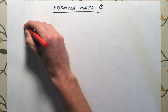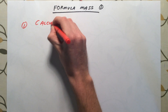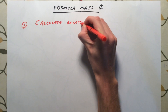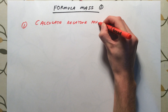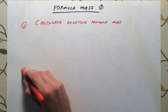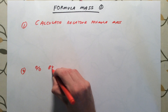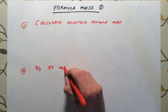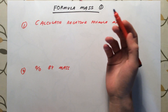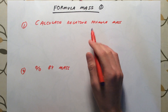There are two things we need to be able to do with formula mass. The first is to calculate the relative formula mass. The second is to calculate percentage by mass for an element in a compound. We're going to look at a couple of examples of each. Calculating the relative formula mass is relatively straightforward — all we need to do is work out the total mass of the atoms in a particular compound.